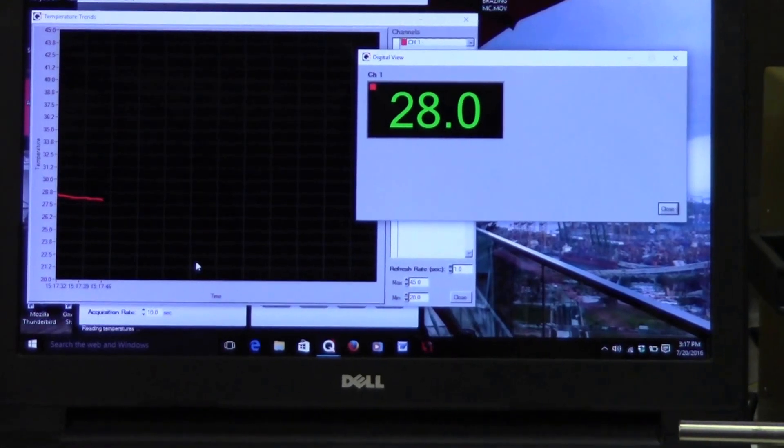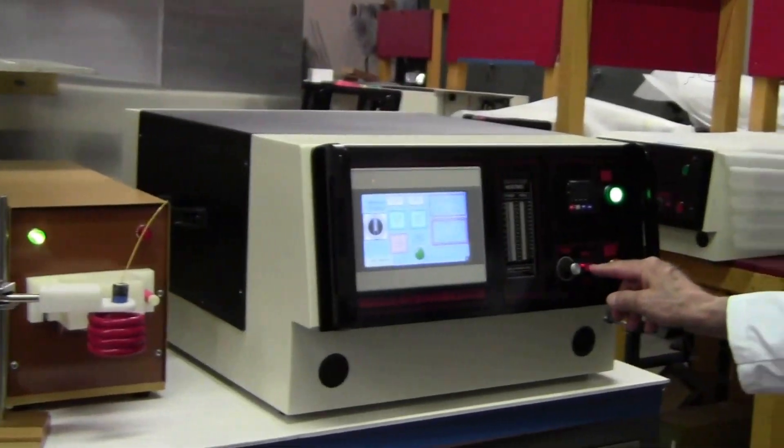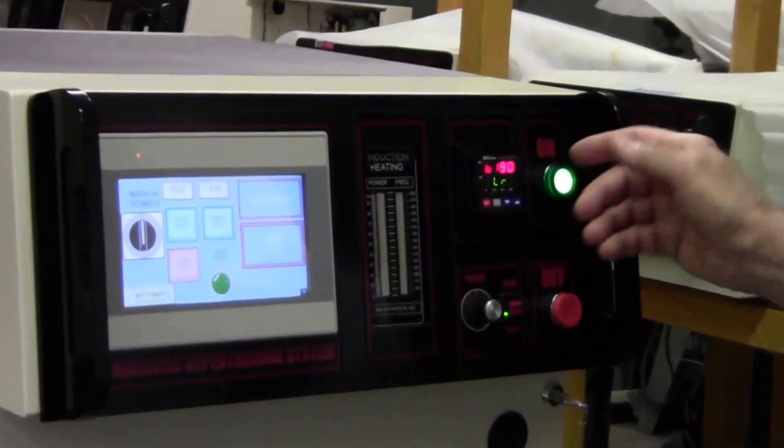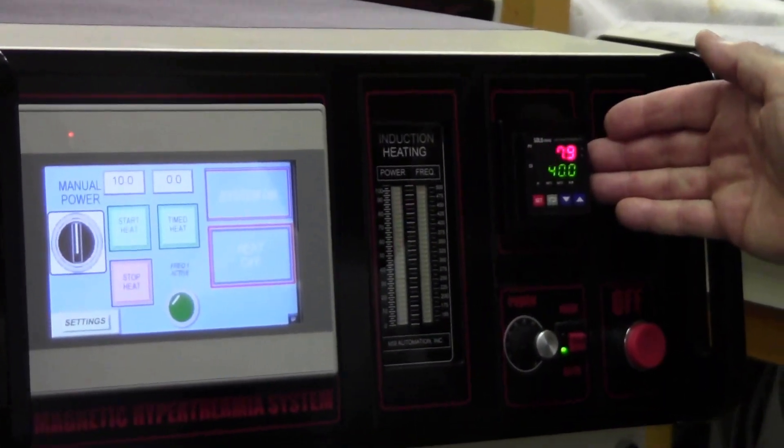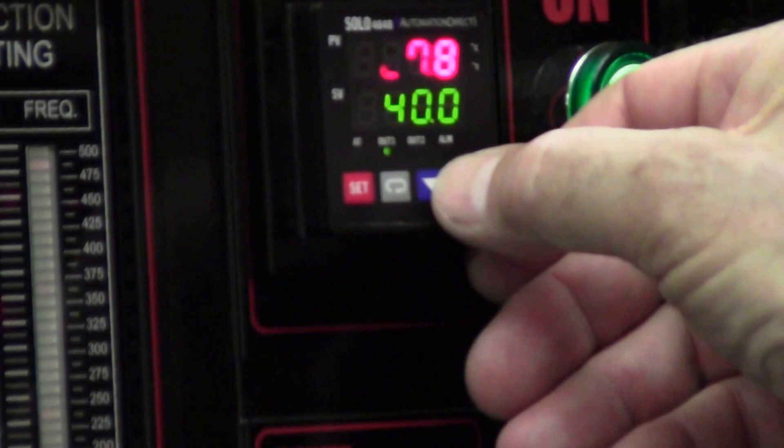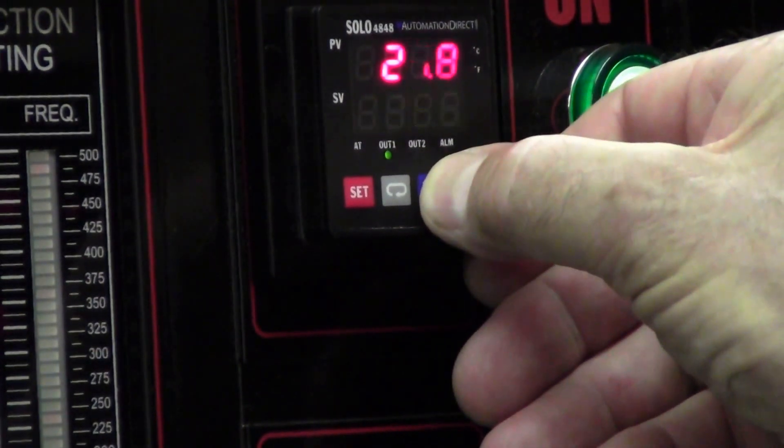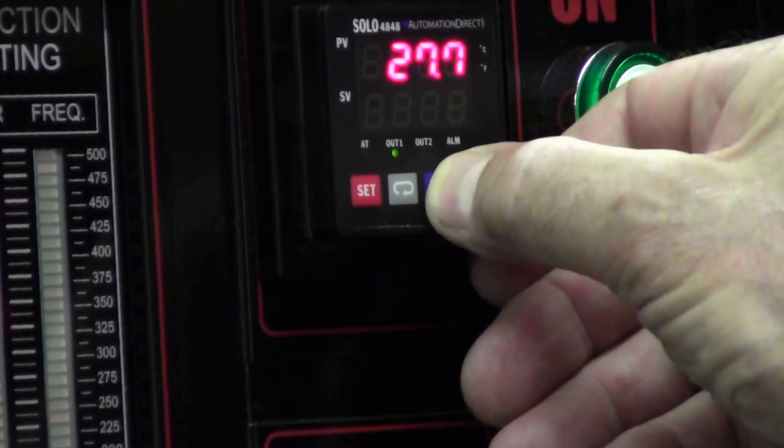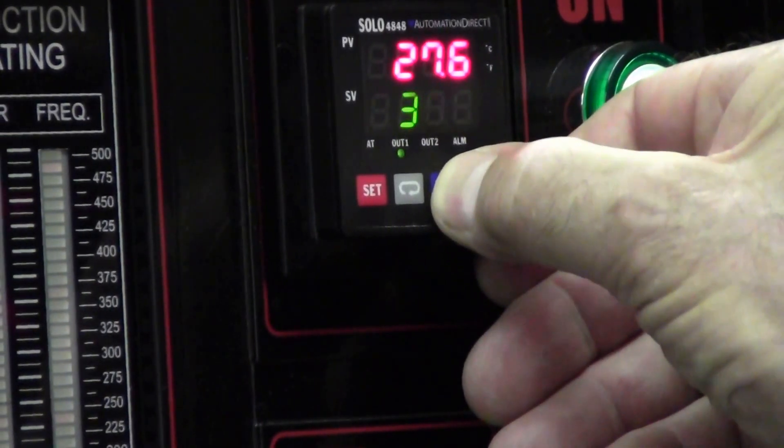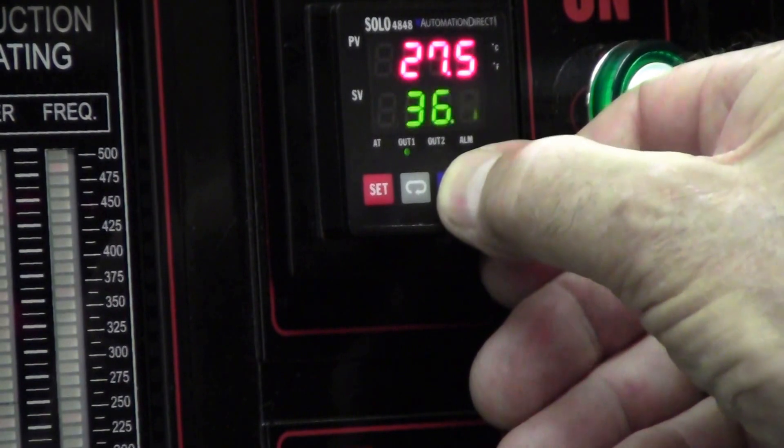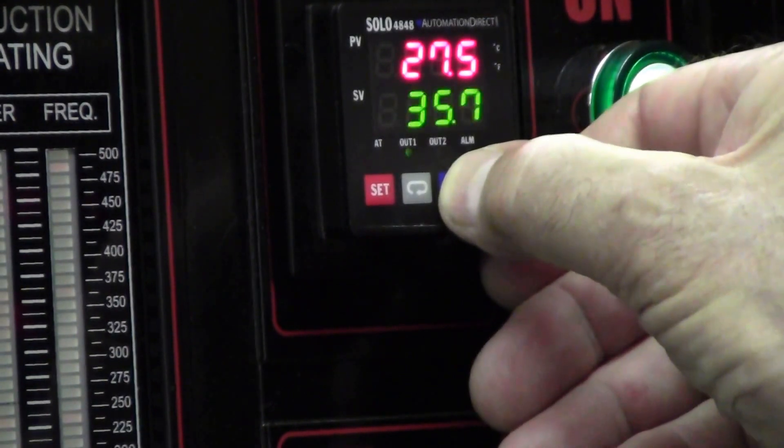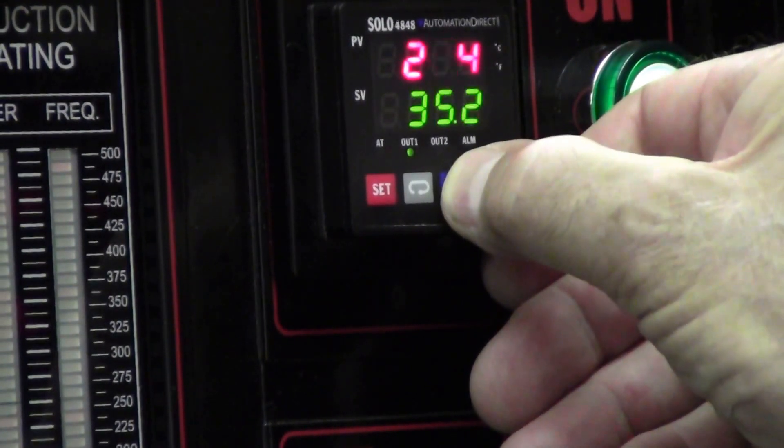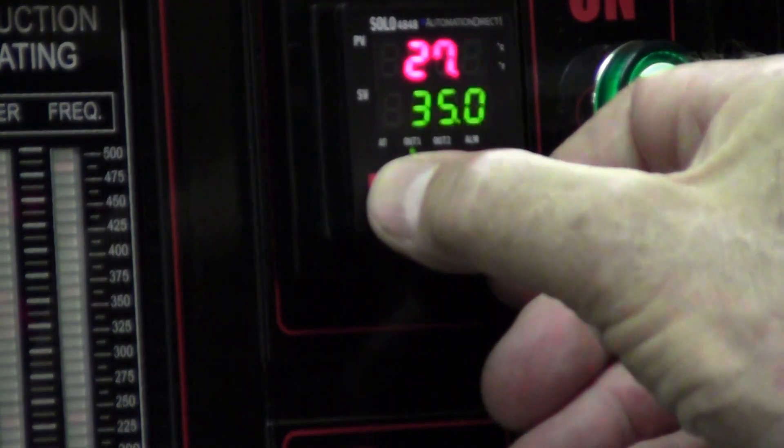This time we're going to use the temperature controller. Swing back over here. You can zoom in on it. I'm going to reduce the set point to 35 centigrade. Then I press set.